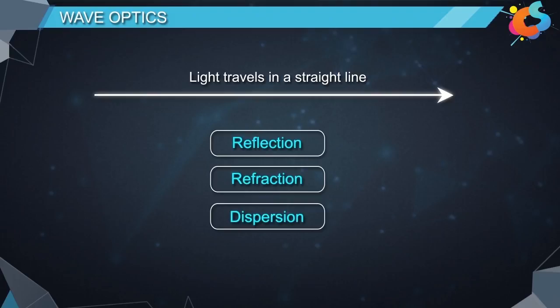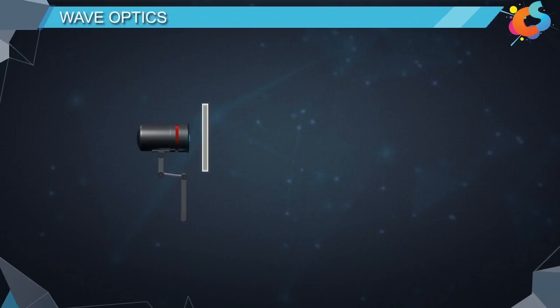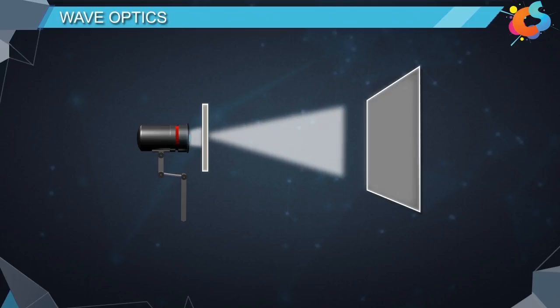Now the question is, does the light really travel in a straight line? Observe the illustration. Consider a light source illuminating a screen. If we place a coin in front of the light, the coin obstructs the path of light.